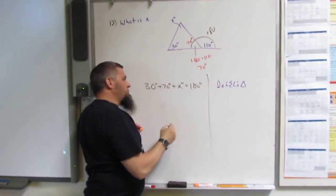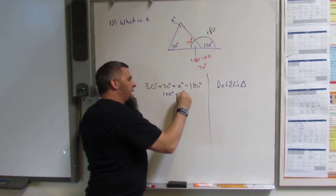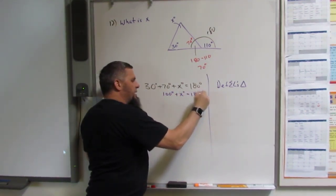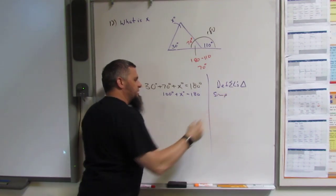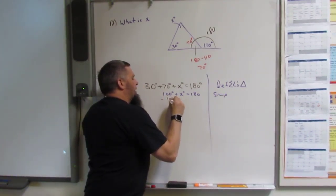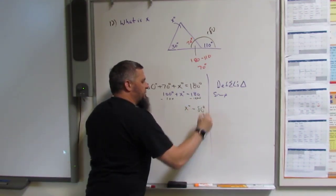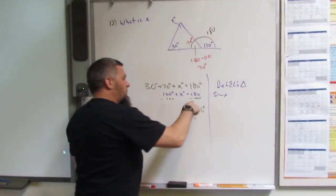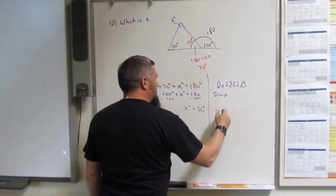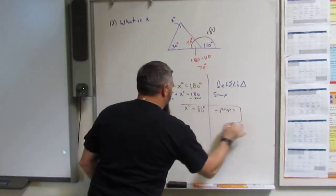And so then we have 100 degrees plus X is equal to 180, and that's simplification. And then we have minus 100 minus 100, and that's X is equal to 80 degrees. Because of subtraction property of equality, and there's your proof.